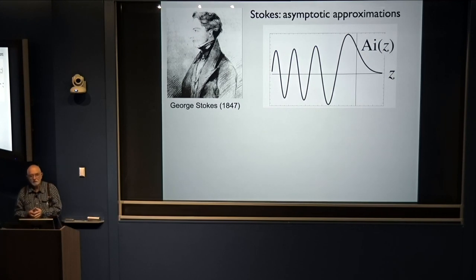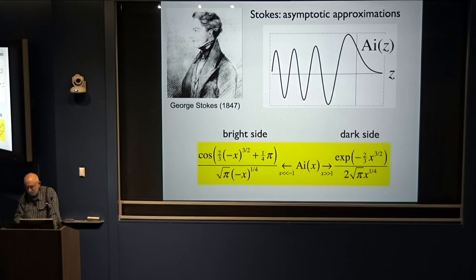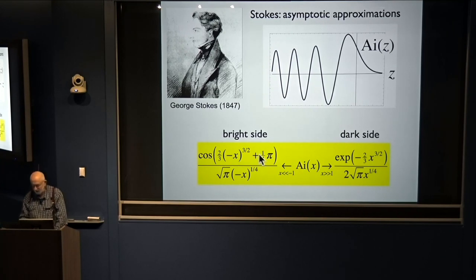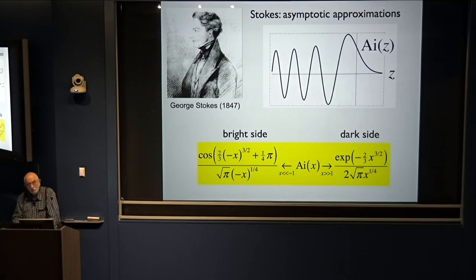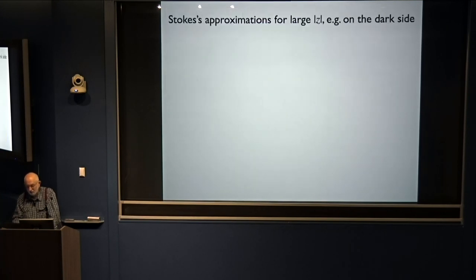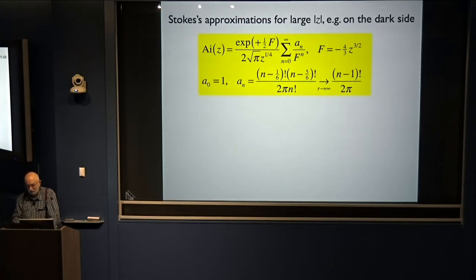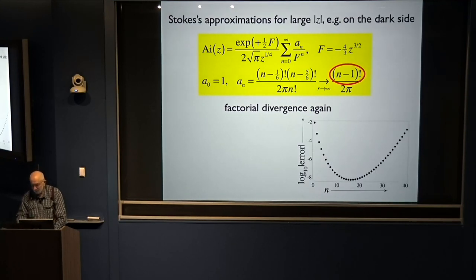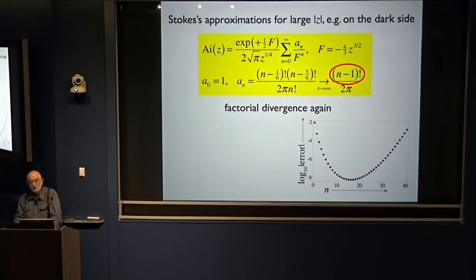Stokes found asymptotic approximations for the Airy function. On the dark side: exponential decay. On the bright side: this oscillation, the cosine with the correct phase — and now we know it's a geometric phase. He also realized that these were the first terms of infinite series. On the dark side, there's a series, and he realized it's divergent — it's factorial divergence again. The terms first decrease, and then the factorial takes over and they increase.